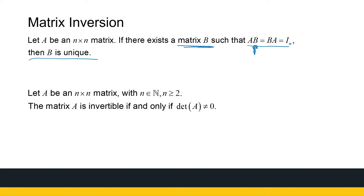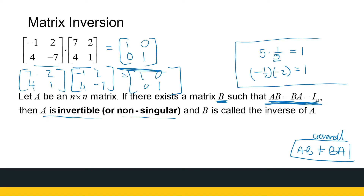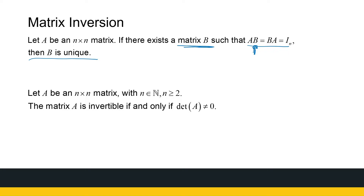Let's go back to numbers, because you're more familiar with numbers. If I look at 5, there's only one number to multiply with 5 to get 1 — it's a unique multiplicative inverse. The same holds for matrices. That matrix B is unique, and we call B the inverse of A. So B is then A inverse, and we write it A⁻¹. That's the inverse matrix.